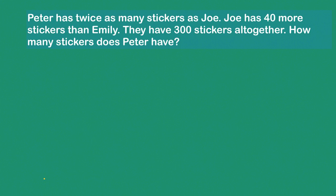Peter has twice as many stickers as Joe. Joe has 40 more stickers than Emily. They have 300 stickers altogether. How many stickers does Peter have?